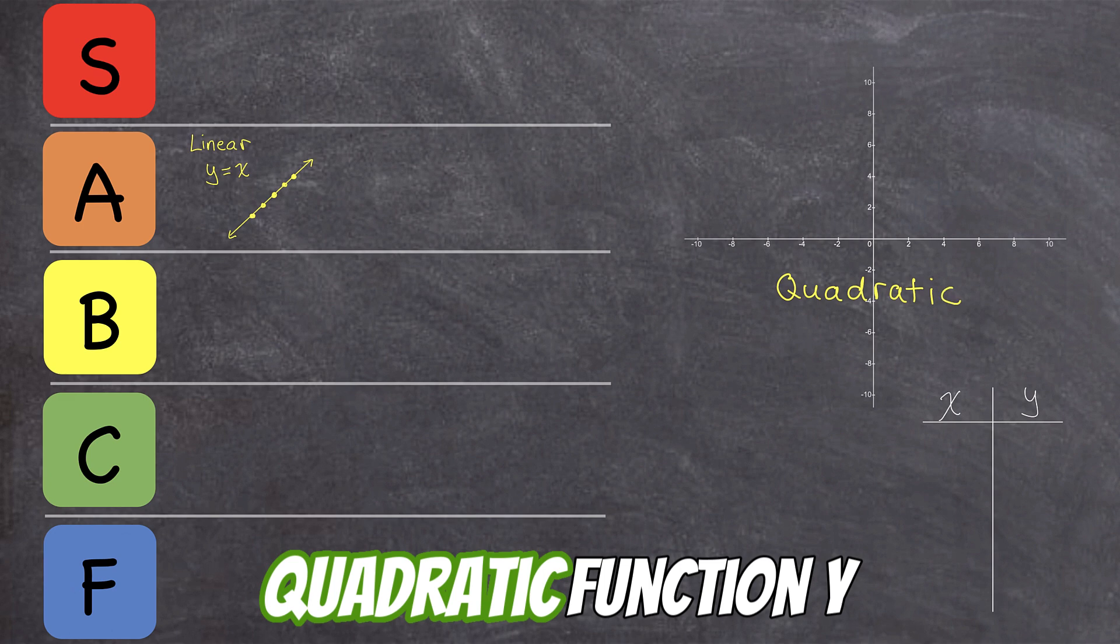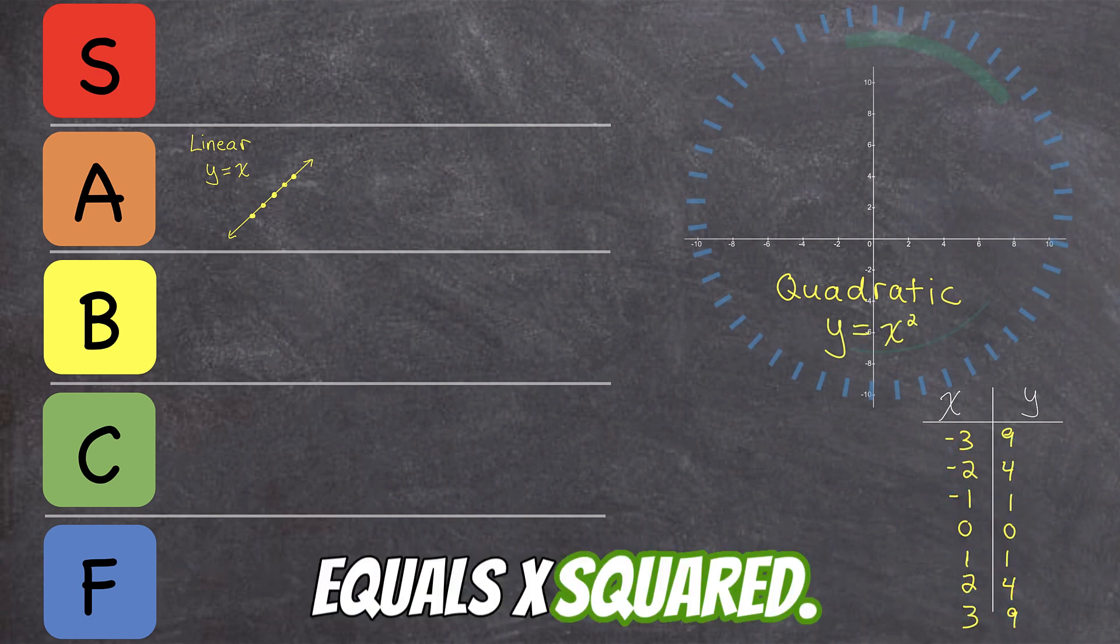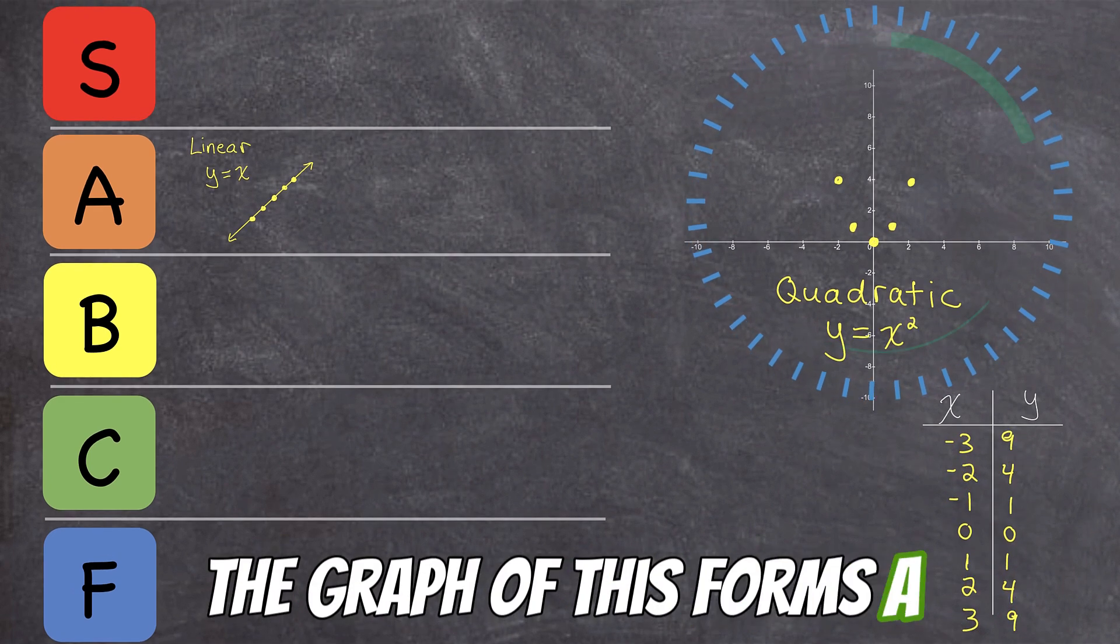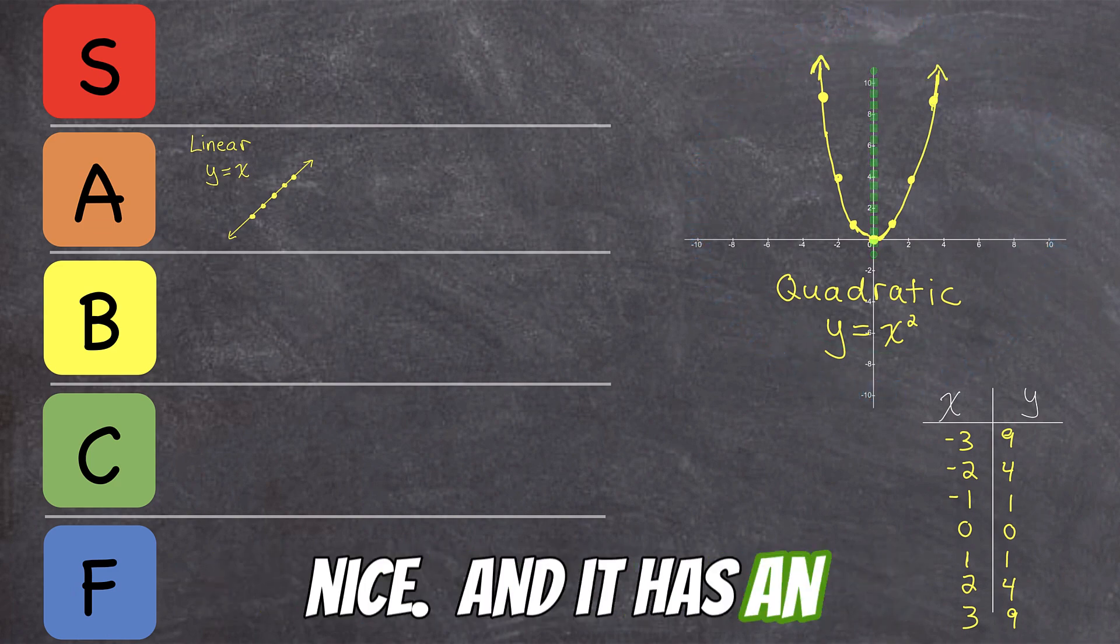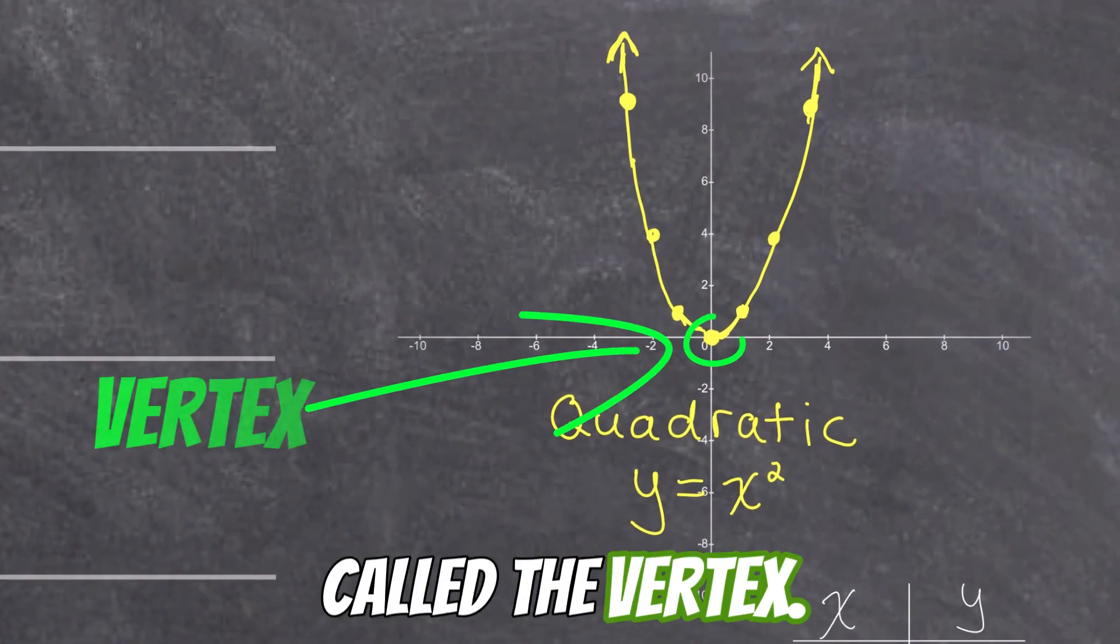Next up, we have the quadratic function y equals x squared. The graph of this forms a cool shape called the parabola. It's symmetrical, which is nice. And it has an absolute max or min called the vertex.